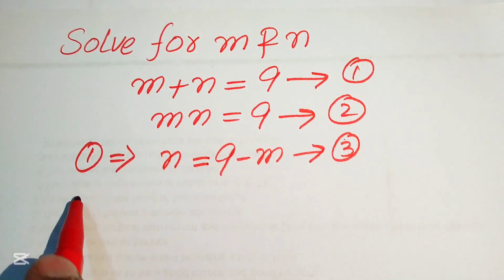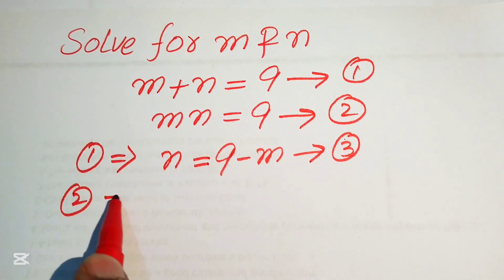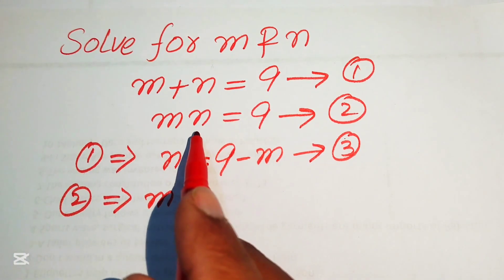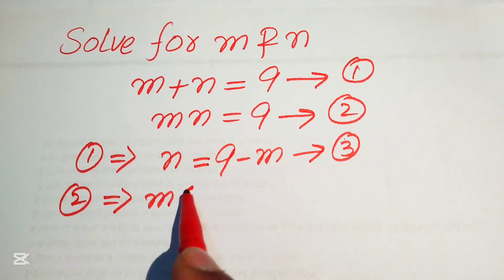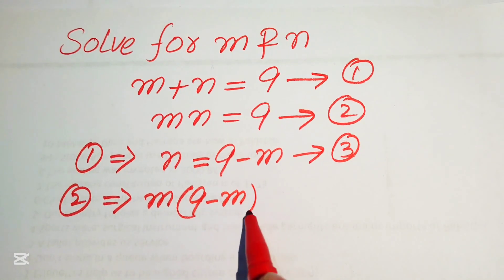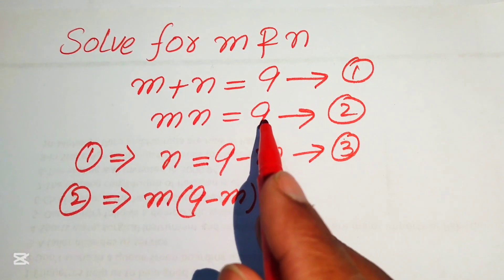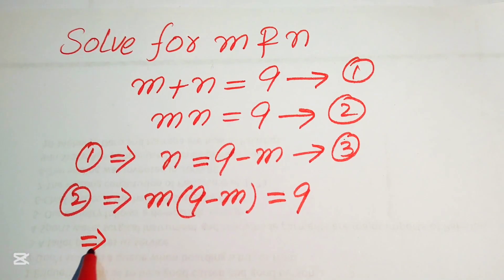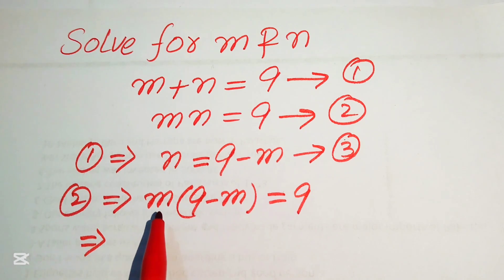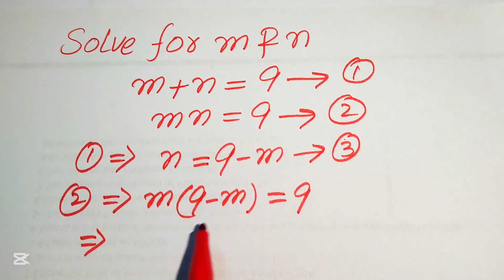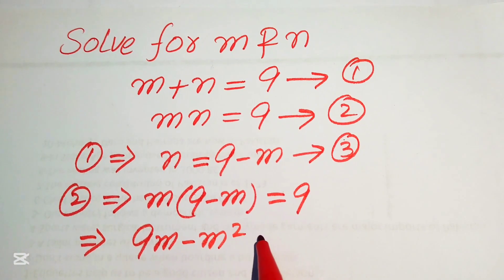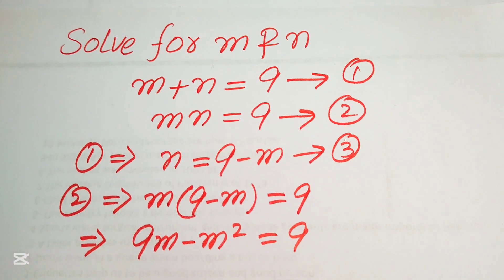Now we substitute the value of n from equation 3 into equation number 2. So equation 2 becomes m times (9 minus m) equals 9. We multiply m through both terms and it becomes 9m minus m squared equals 9.